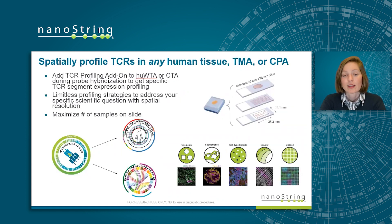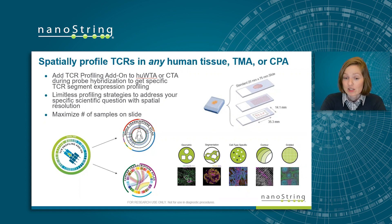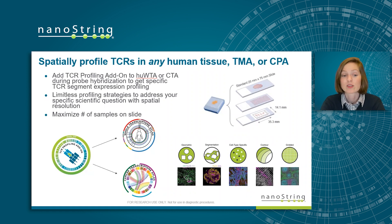With Nanostring's new TCR profiling atom panel, you can leverage the GeoMix DSP to spatially profile TCRs in any human tissue, tissue microarray, or cell pellet array. Using the TCR profiling atom panel is easy — you can just add it to the human WTA or CTA during probe hybridization, enabling specific TCR segment expression profiling by regions of interest. The rest of the slide prep protocol remains the same. GeoMix DSP has built-in tools to help select ROIs from geometric shapes such as circles or squares, contoured or gridded selections, to even hand-drawn ROIs, creating truly limitless profiling strategies to address your specific scientific question with spatial resolution.